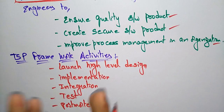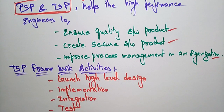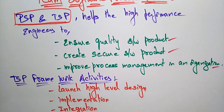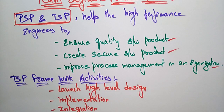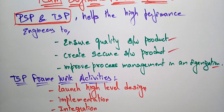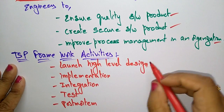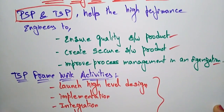So the name itself tells you — it is a team, a group of people working on a software process. The goal of any team or personal software process is to achieve a high-performance product. To ensure software quality, create secure software, and improve process management, you have to follow Personal Software Process along with Team Software Process. These are the framework activities involved in the Team Software Process. Thank you.